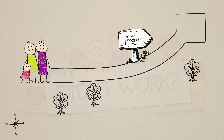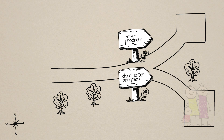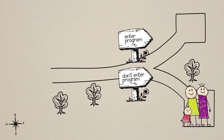A comparison group can help us answer this question because it gives us a systematic way of predicting what would have happened to children and families if they had not received the program or service in question.